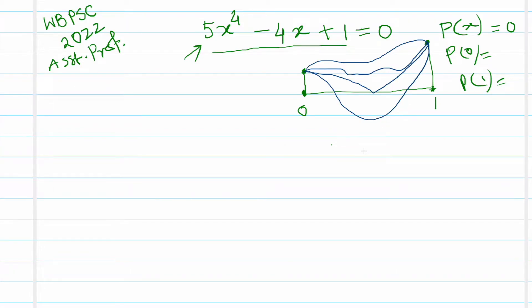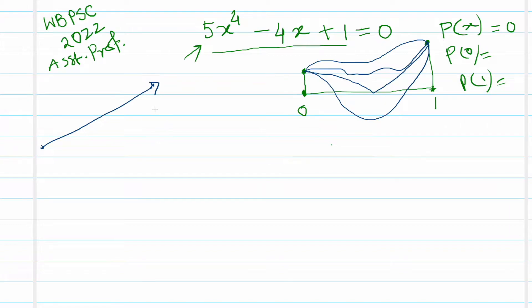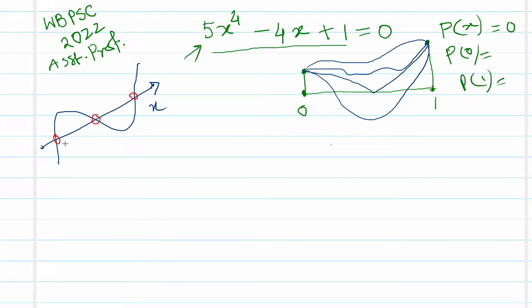You have to understand the relationship between the graph of a polynomial and its roots. On any interval, the zeros are exactly where the graph intersects the x-axis. For example, if a curve crosses the x-axis at three points, the function has three zeros or three roots in that interval.